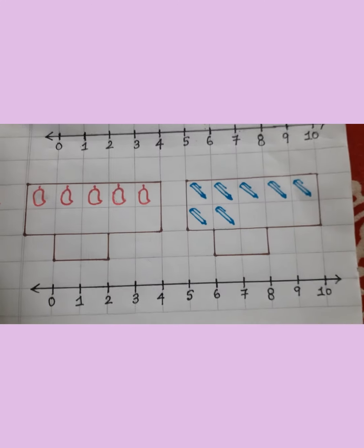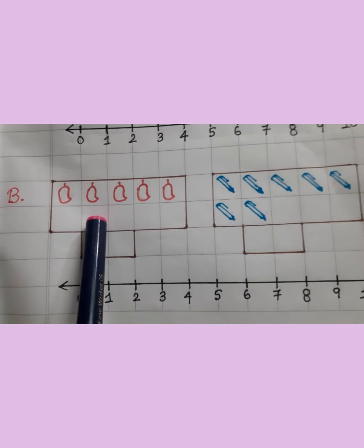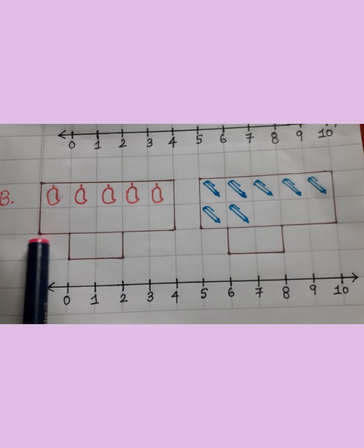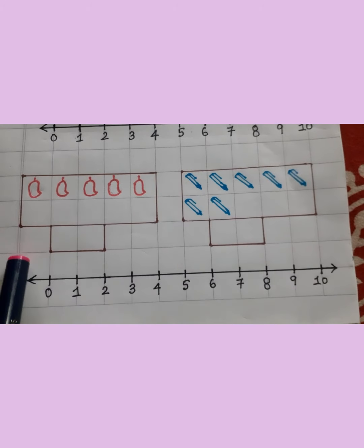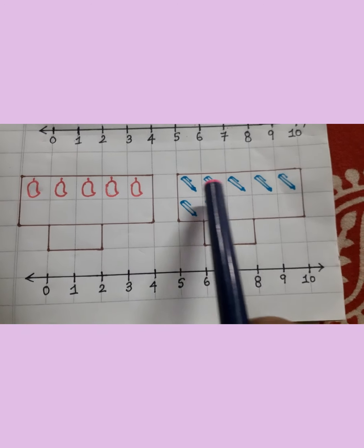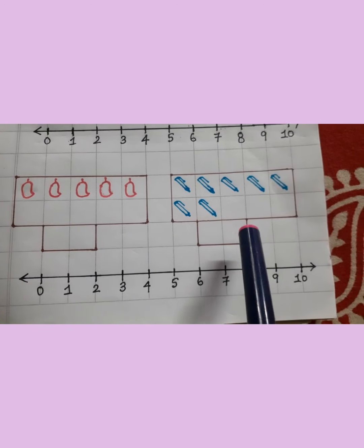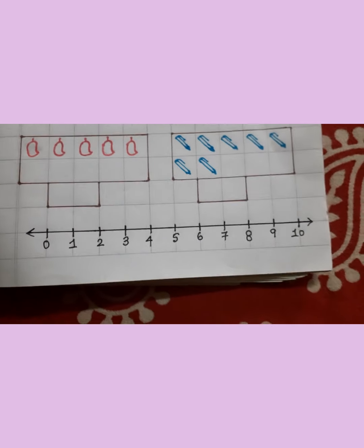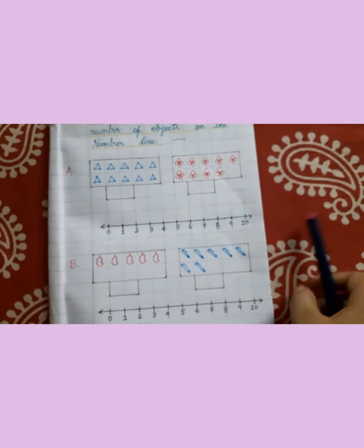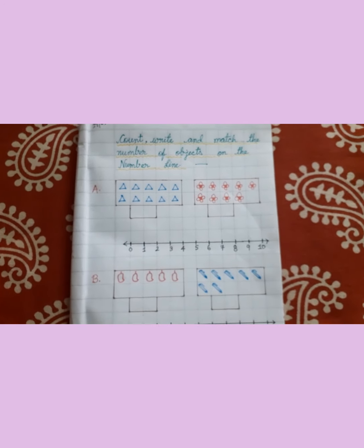Next, let's see question number B. What is this? Yes, these are mangoes. So how many mangoes are here? You will count and write. Then you will come here, you will count all the pens and write down. Then on the number line, you need to match it. Now kids, you can see this is our homework.